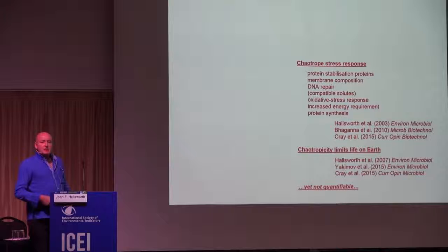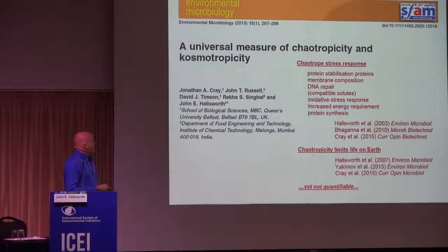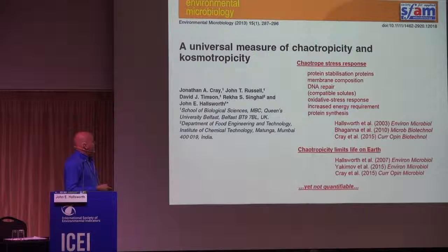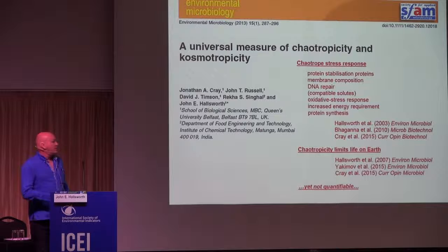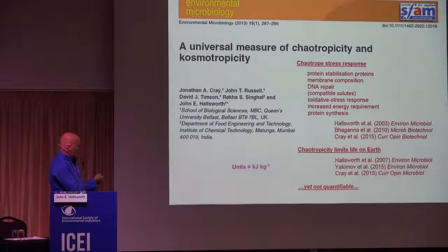Even though chaotropicity has a big role in life on earth, it has never been quantified. We have scales of measurement for temperature from 300 years ago, pressure from 400 years ago, and pH from 100 years ago, but there were no units and no methods to quantify chaotropicity. So we used a very simple experiment — one high school children could do — we got a solution of agar, added different substances under the gelation temperature, and using that system we quantified chaotropicity and produced a scale.